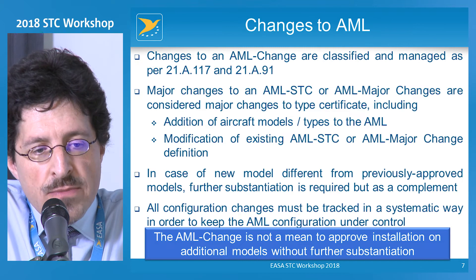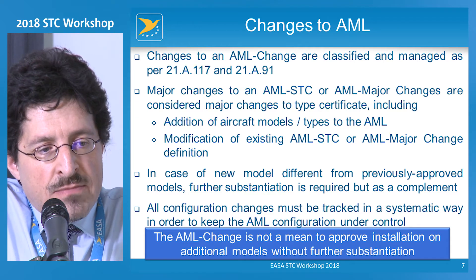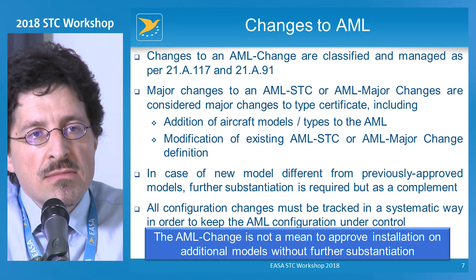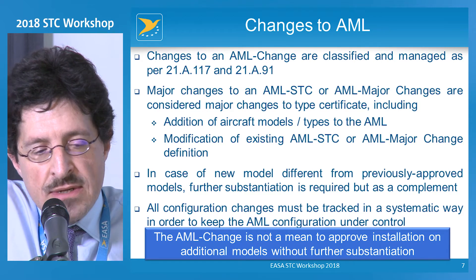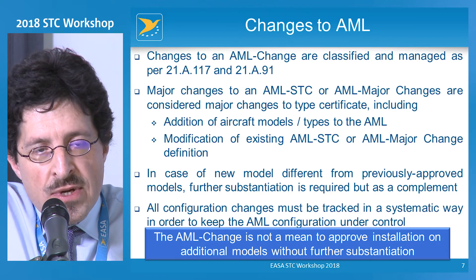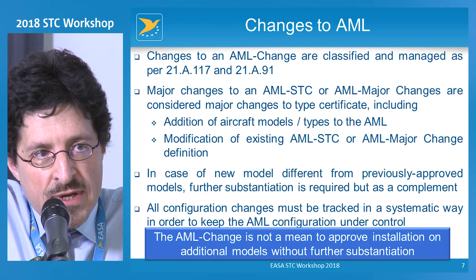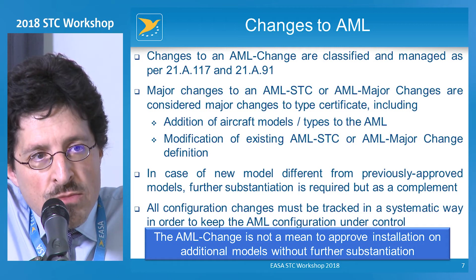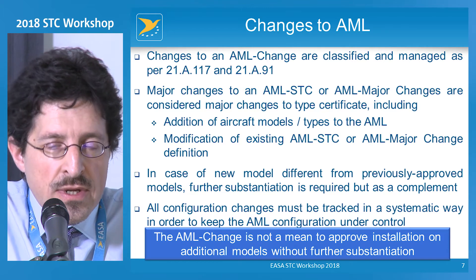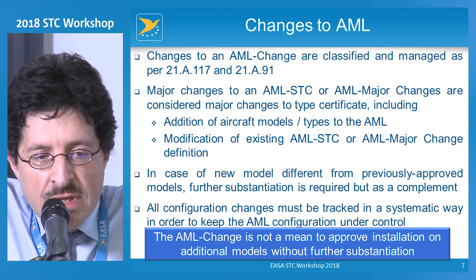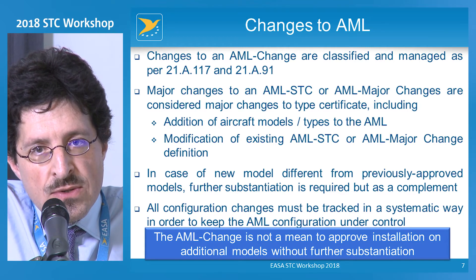Once you get an AML approval, you may wish to modify it. Changes to an AML change are classified and managed under Part 21A.117 and .91. AML changes are managed like any other major change or STC. There are two main ways to change an AML approval: one is to include additional models, which is considered a major change in itself; the other is to modify the technical scope of the change even without including new models. You will need to consider the definition in Part 21A.91 to determine if those modifications constitute a major change, considering whether there is an appreciable effect on mass, strength, etc.